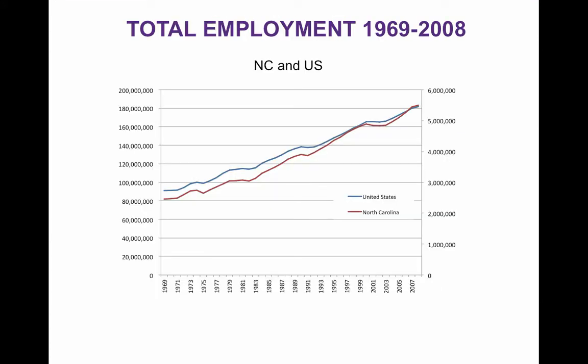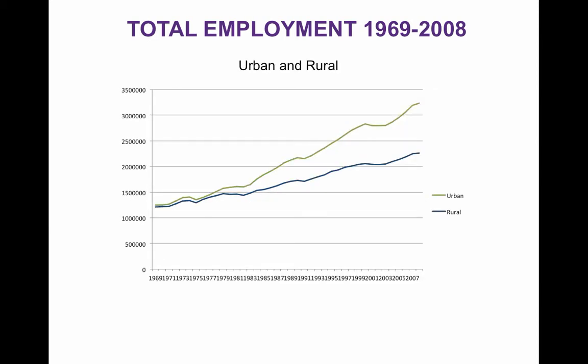Now let's look at the change in total employment for North Carolina between 1969 and 2008, and see how this compares to national employment levels. As the figure illustrates, the state has performed very well and actually performed much stronger than the rest of the country in the latter part of this period. But the question is, how did this success translate to the urban and rural areas of the state? As this figure illustrates, the success was realized mostly in the urban areas.